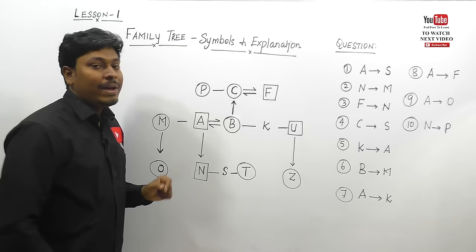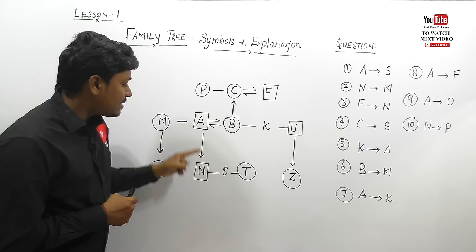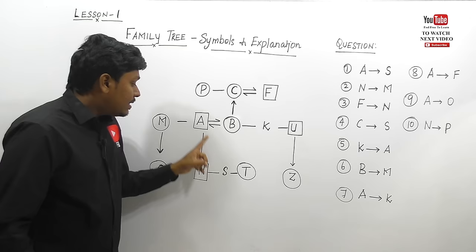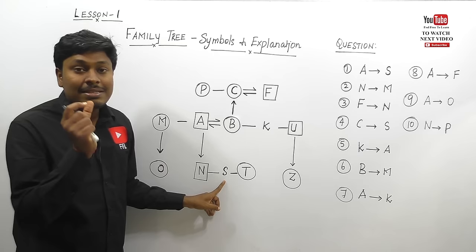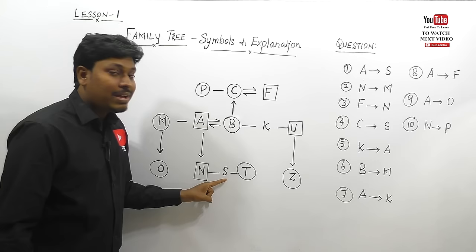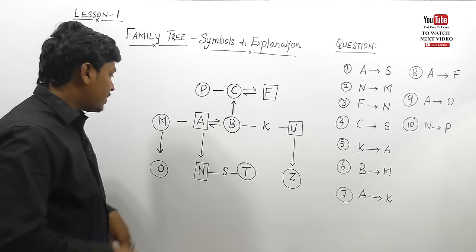Question 1: A to S — what is the relation of S from A? We know A is having a son N. But we don't know the gender of S. If S is a male person, the answer is son; if S is a female person, the answer is daughter. So the answer is either son or daughter.